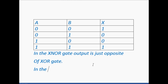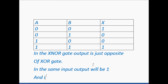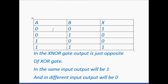In the same input, the output will be 1, and in different input, the output will be 0. Same input 0, 0 — output is 1. Different input 0, 1 — output is 0. Different input 1, 0 — output is 0. Same input 1, 1 — output is 1.